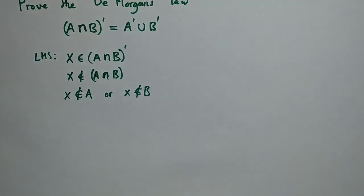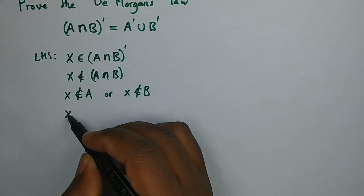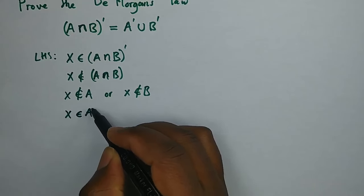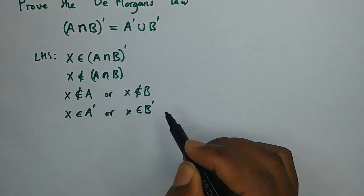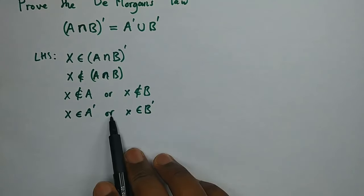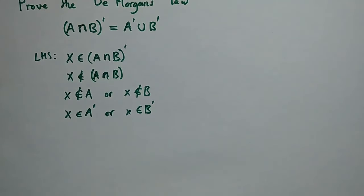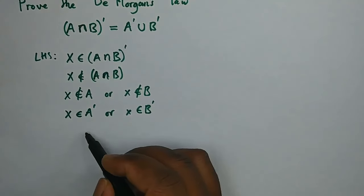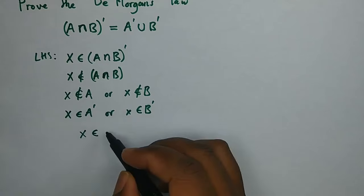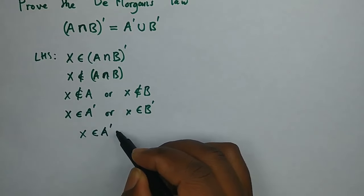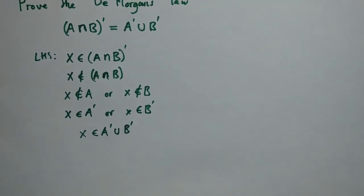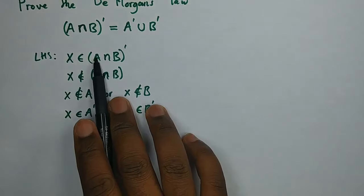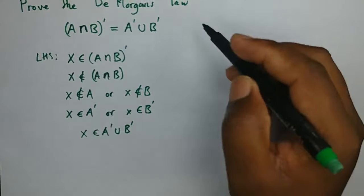The reason why we're using 'or' is because we have to prove it equals the right hand side which has the union. If x is not a member of A, then x is a member of A', or x is a member of B'. Because of the word 'or', we know that 'or' means union, so we can say x is simply a member of A'∪B'. We have shown that the left is equal to the right.